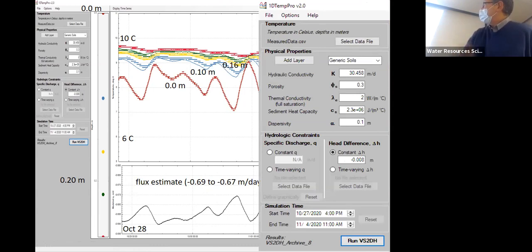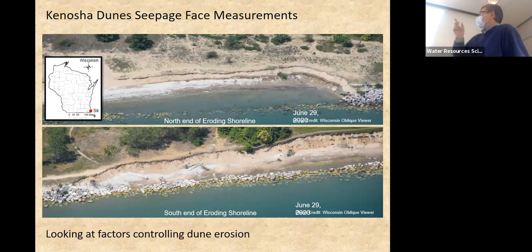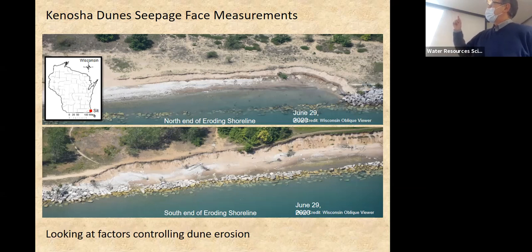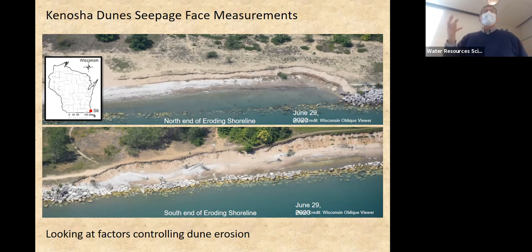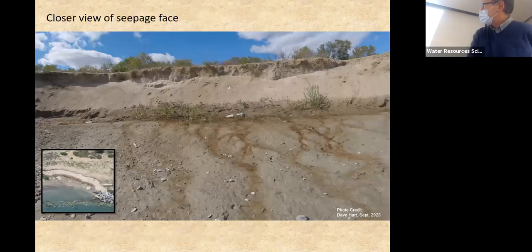You can also get hydraulic conductivity and other parameters out of that software. Most people do this vertically in lake and stream beds, but we also looked at a seepage face. There's an area at Kenosha Dunes in southeastern Wisconsin on the Lake Michigan shoreline that's eroding rapidly, and people think seepage might be part of that story — seepage reduces soil strength so it can fall and collapse more readily.